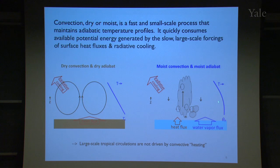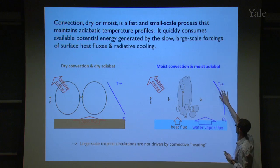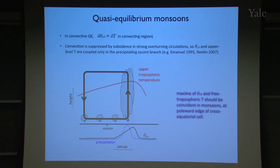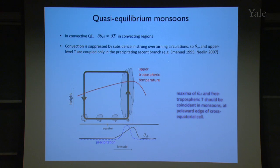In other words, you just slide from one moist adiabat to a warmer moist adiabat where θE and some vertically averaged temperature move together. This convective quasi-equilibrium — that variations in boundary layer θE track with tropospheric temperature — only works in regions where you're convecting through the depth of the troposphere.